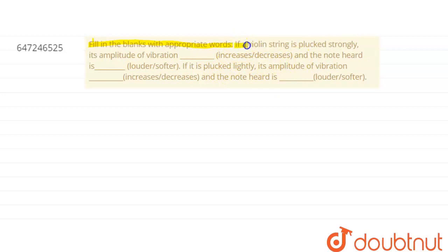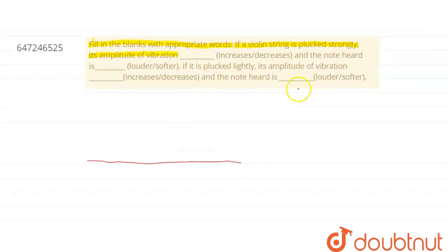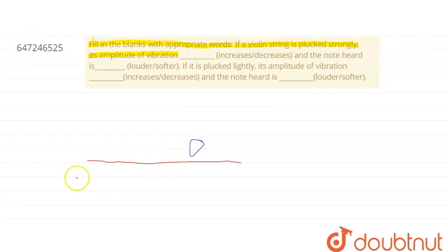Let's see. First of all, if a violin string is plucked strongly, its amplitude of vibration [dash] and the note heard is [dash]. Basically, it's given that if a violin has a string, let's say this is the string, and I pluck it very hard with a plucker. Let's say it was a plucker, and I plugged it strongly.